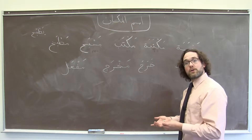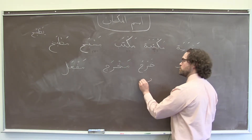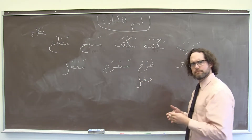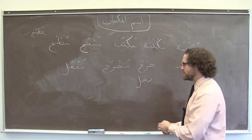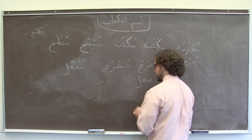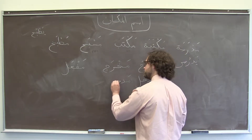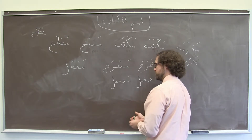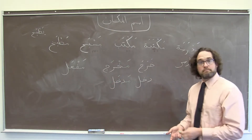Suppose we want to talk about an entrance instead. We could use the verb دخل. And if we wanted to talk about an entrance — a place of coming in — we apply the same template exactly, and we get مدخل, an entrance.